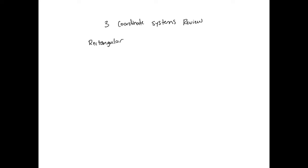In rectangular coordinates, you have your x direction, your y direction, and your z direction pointing upwards. Your unit vectors point along those three directions. So you have your i unit vector pointing along the x direction, your j vector pointing along y, and your k unit vector pointing along z.